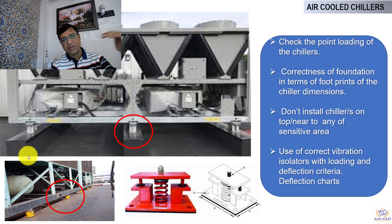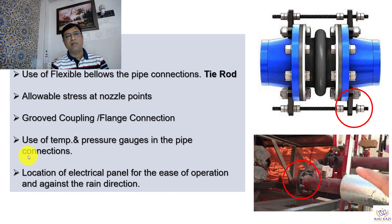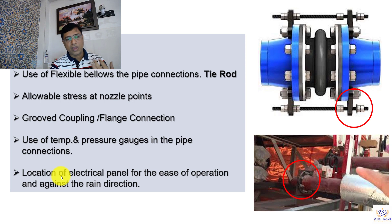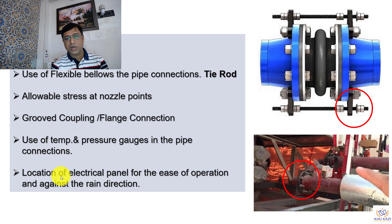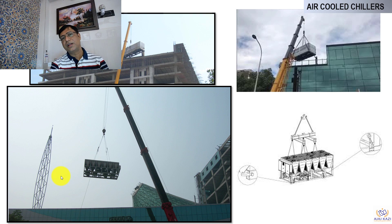We cannot install chillers if there is a sensitive area below without addressing vibration and noise. We also have to check the foundation before installation. When it comes to connections, seismic snubbers are another element that can be added so that in an earthquake event the chillers do not topple. We also have to install vibration bellows — flexible bellows — on the pipe connections to the chillers, as shown here. We can use groove fittings and other elements. The electrical panel should also be positioned considering ease of operation during rain, so that when the panel is opened, rain does not get inside.